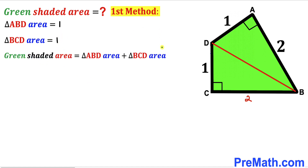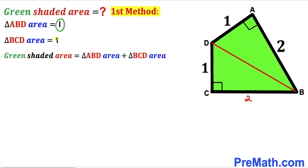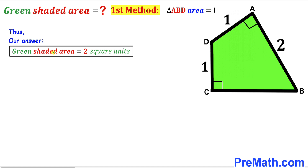Here's our final step for Method 1. The green shaded region area equals the area of triangle ABD plus the area of triangle BCD, which is 1 + 1 = 2 square units. So the area of this green shaded quadrilateral turns out to be 2 square units using the first method.